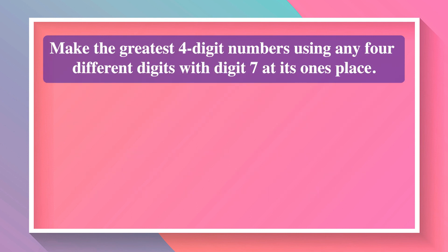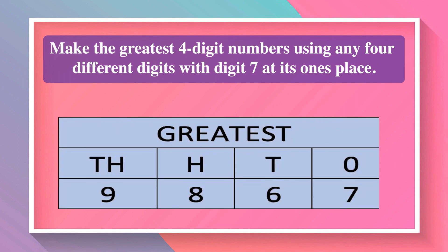Make the greatest 4-digit number using any 4 different digits with digit 7 at its ones place. The place of 7 is fixed at ones. We choose the remaining digits from 0,1,2,3,4,5,6,8,9. To make the greatest number, we choose the greatest available digits and place the greatest digit at the highest place. The greatest number will be 9,867.